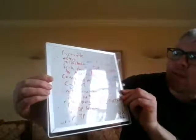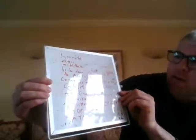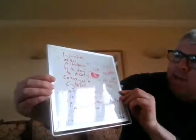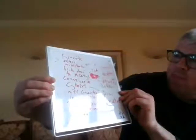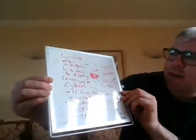The pyruvate enters the mitochondria and is broken down to this compound - Acetyl coenzyme A. Pyruvate oxidation takes place in the matrix of the mitochondria, only in eukaryotes.